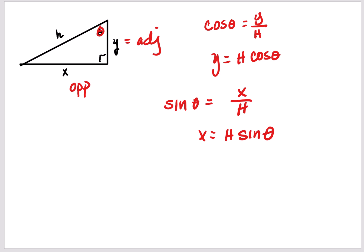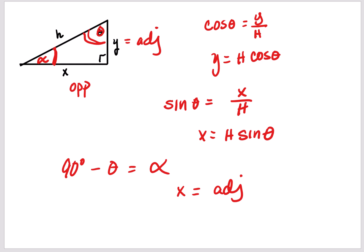Another way to handle this: if you do not want to use the theta on top, since this is a right triangle, this angle and that angle must equal 90 degrees. So you can subtract 90 minus theta to get the angle at the bottom corner, called alpha. When you use alpha, x is next to — adjacent — so use cosine, and y is opposite so use sine. So x equals h cosine alpha and y equals h sine alpha.